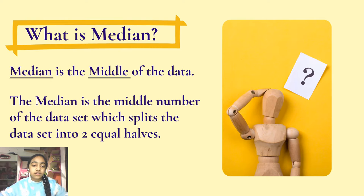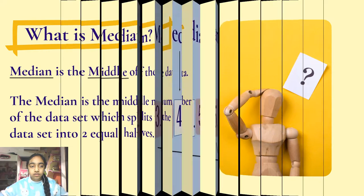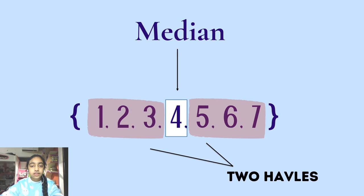What is median? The median is the middle of the data set which splits the data into two equal halves. In this data set, the median is the middle number that splits the data into two equally sized groups or halves.